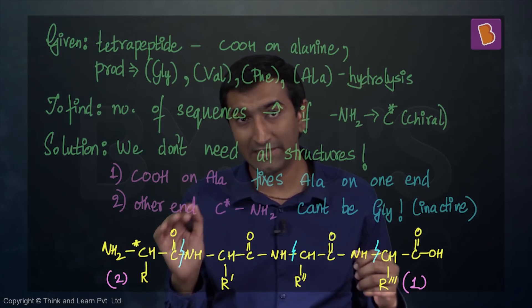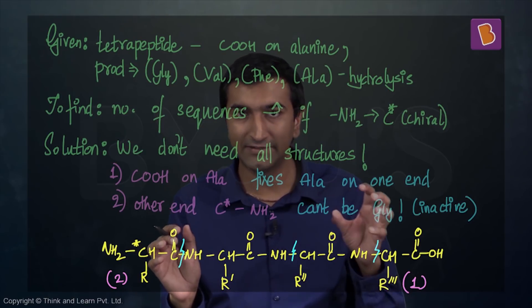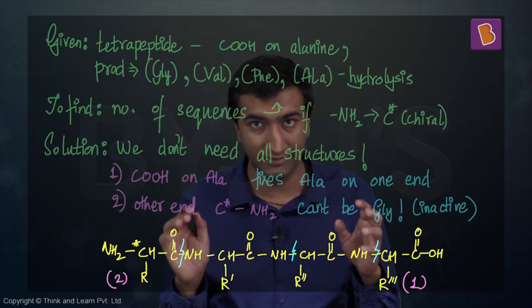You see, on one end I've put a C star, which is the chiral center. The other end I fixed—this is alanine. So this is why the conditions one and two are written over here and over here.